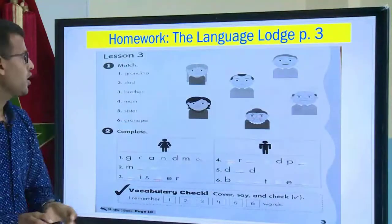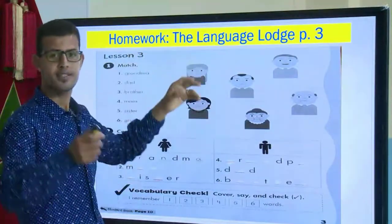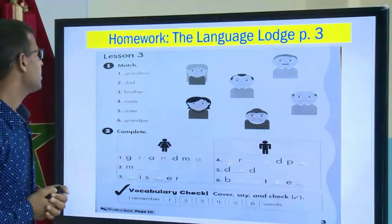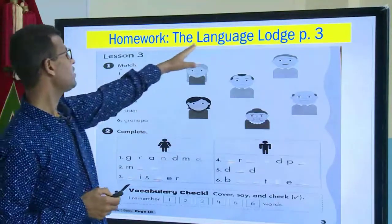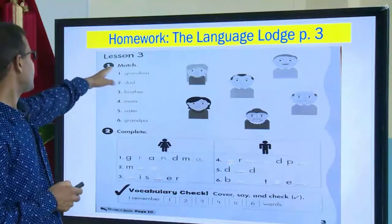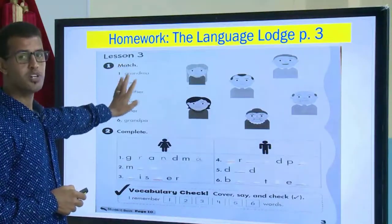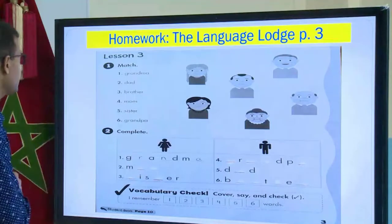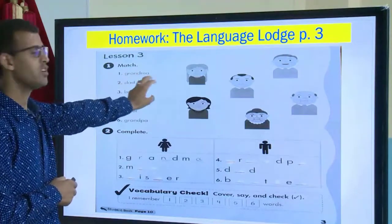Before we move to our lesson today, we are going to correct the homework that I gave you in the last lesson, which is the Language Large, page number three. You had to match the words to the correct pictures. Let us correct the first exercise — this is grandma. Can you find grandma in the picture?